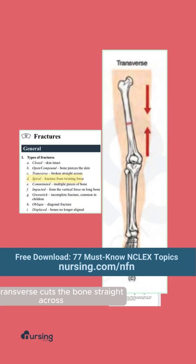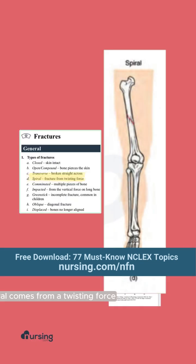Transverse cuts the bone straight across. Spiral comes from a twisting force. This is actually very common in abuse.